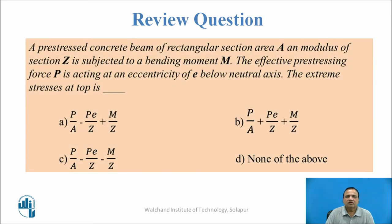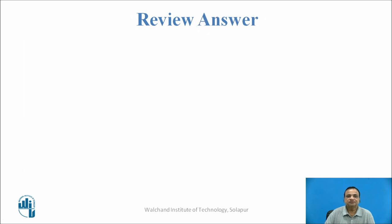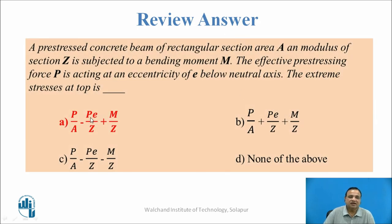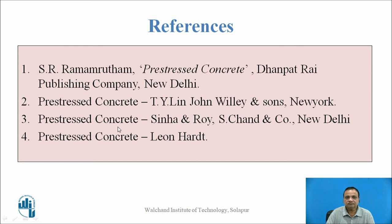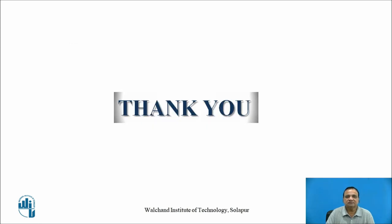Review question: A pre-stressed concrete beam of rectangular cross section with area A and modulus of section Z is subjected to bending moment. The effective pre-stressing force P acts at an eccentricity E below the neutral axis. What is the extreme stress at the top? The right answer is option A: P/A minus P·E/Z plus M/Z. P/A is the direct compressive stress; P·E/Z is negative because it induces bending tension at top; and M/Z induces bending compression at top. Thank you one and all.